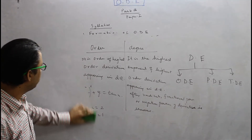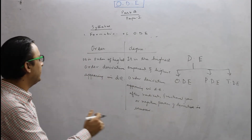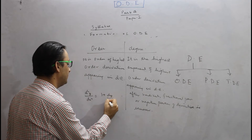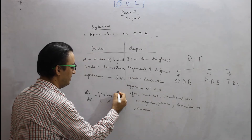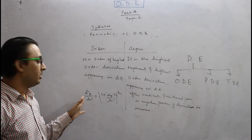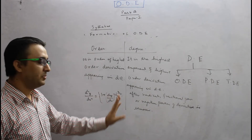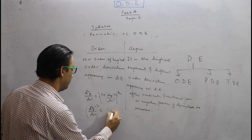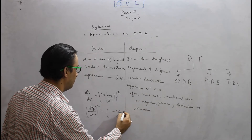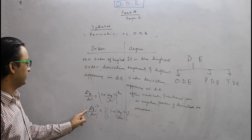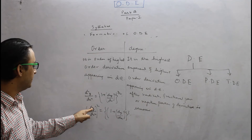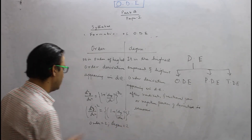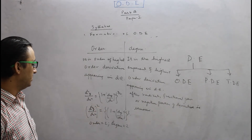Another example: if d²y/dx² = (1 + (dy/dx)²)^(3/2), we see a fractional power, so we must remove it. Squaring both sides gives (d²y/dx²)² = (1 + (dy/dx)²)³. Now the order is 2 (highest order derivative is d²y/dx²), and the degree is also 2, since that is the exponent on the highest order derivative.